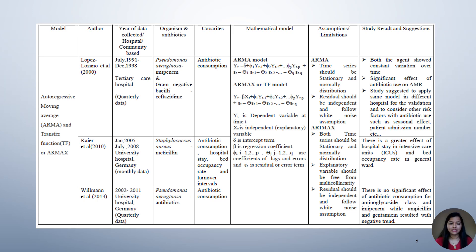Similarly, K.R. et al. in 2010 concentrated on Staphylococcus aureus resistant to methicillin, where along with antibiotic consumption they also considered hospital stay, bed occupancy rate, and turnover intervals. Similarly, Wilman et al. in 2013 concentrated on Pseudomonas aeruginosa resistant to different antibiotics and considered antibiotic consumption as a covariate.